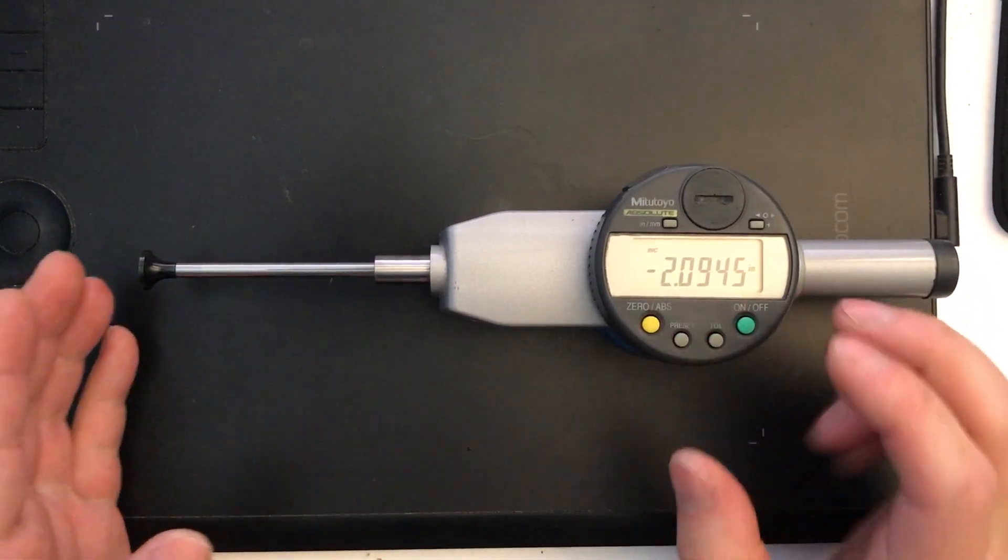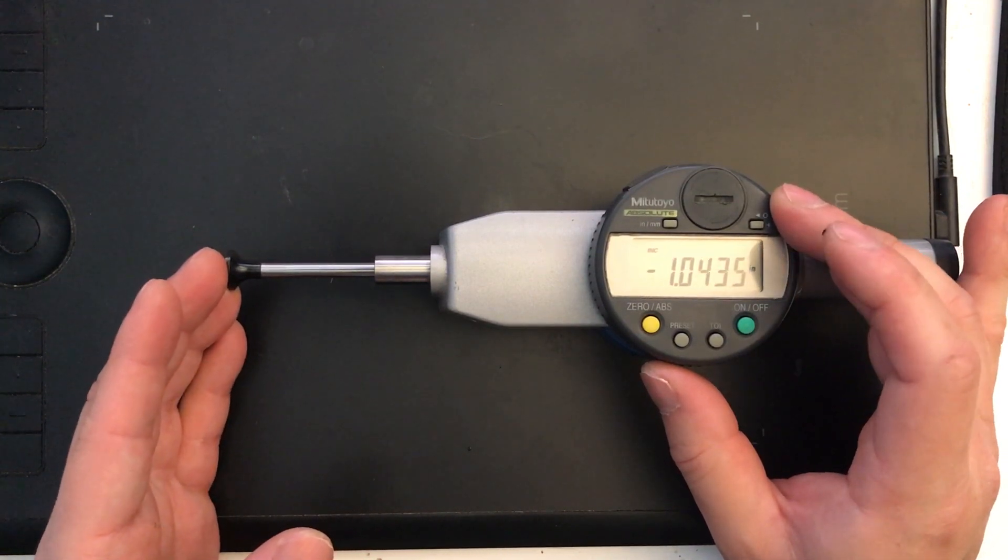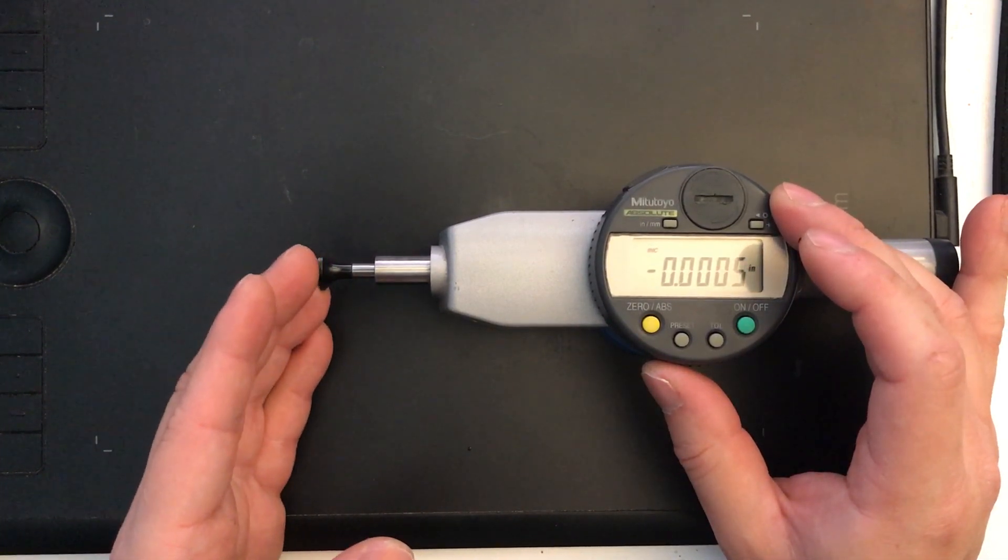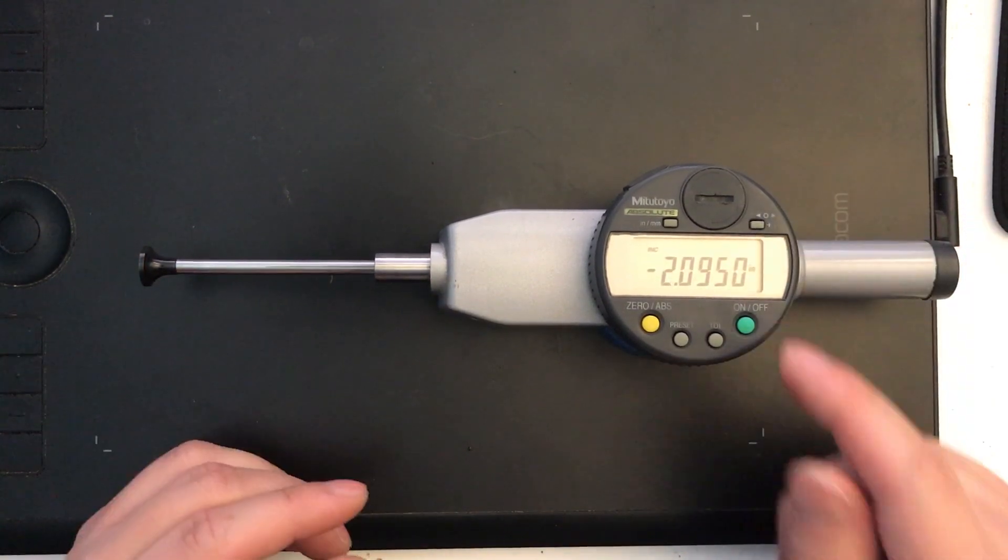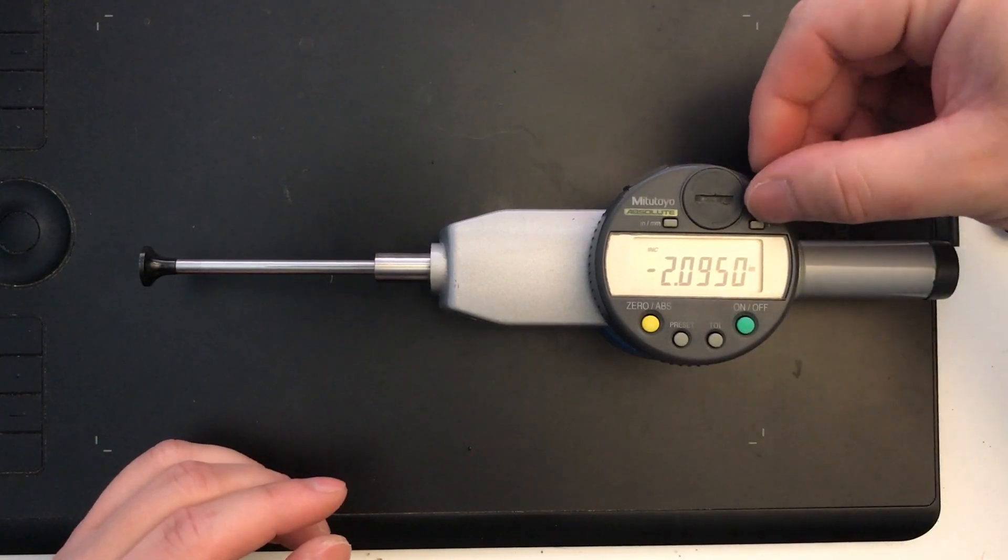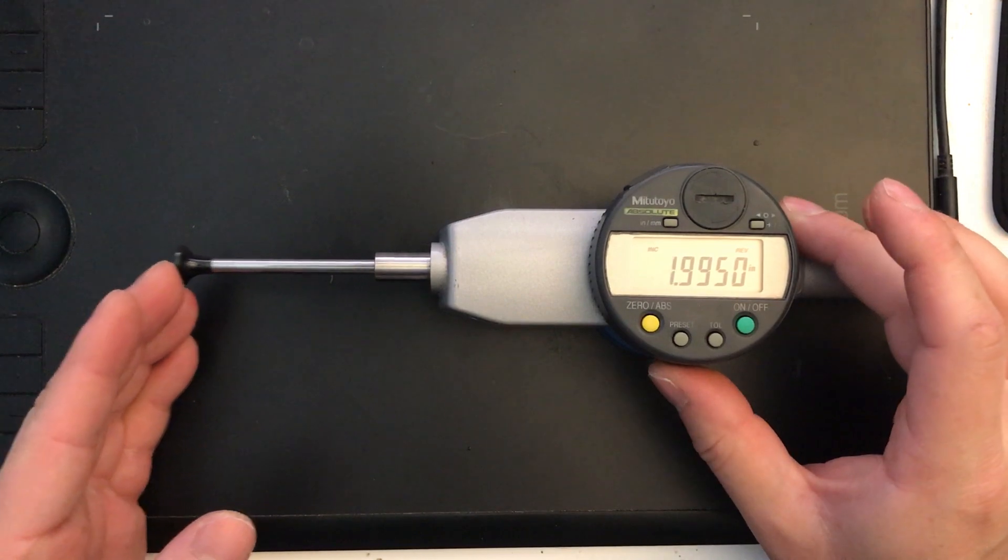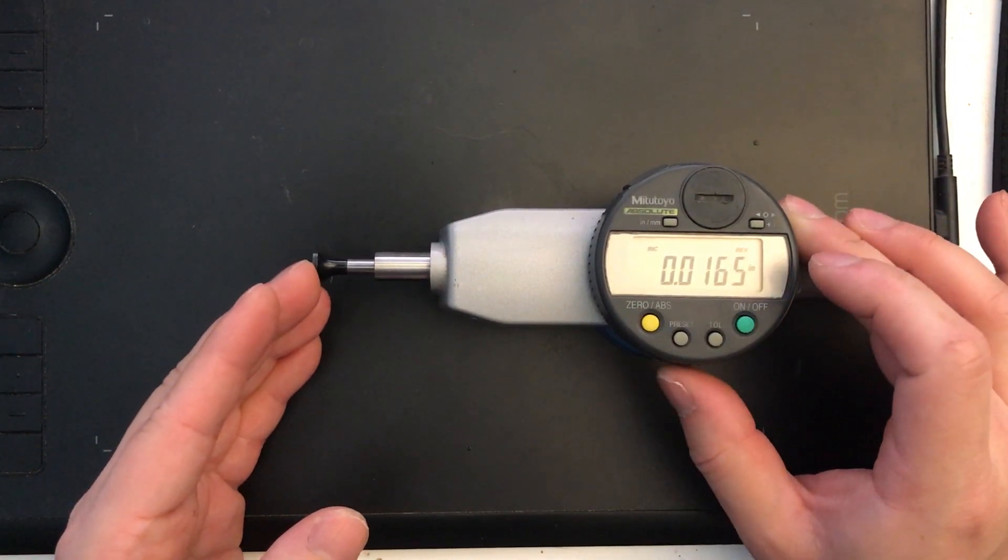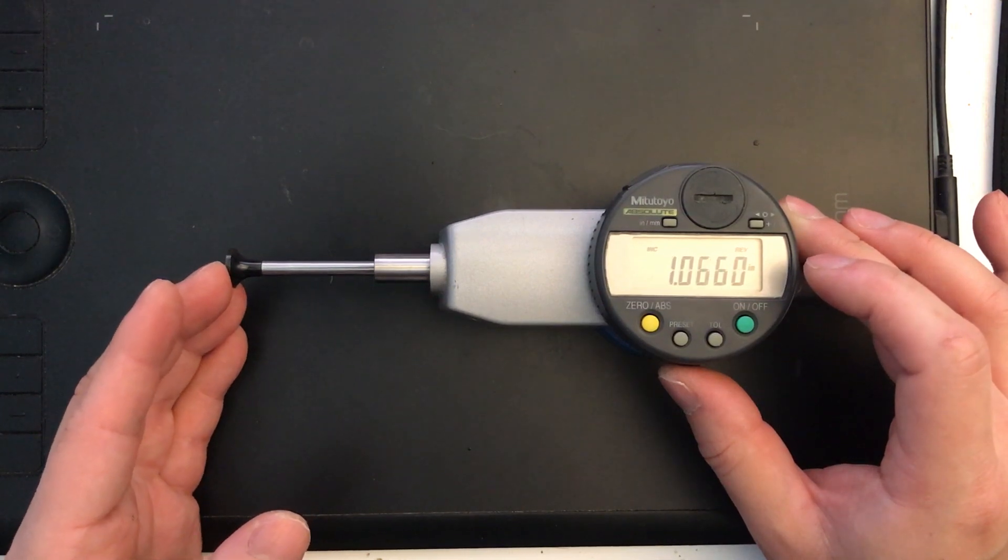You'll notice that there's a negative symbol here, which makes sense because essentially, as far as this is concerned, I'm going from my full retraction all the way out to maximum extension. However, Mitutoyo has provided an option to change that. So by hitting this button here, the direction change, you'll notice it says reverse and the minus sign has gone away. So now, even though the numbers are reading the same way, they're counting up, the minus sign is gone, and it's a little more intuitive.